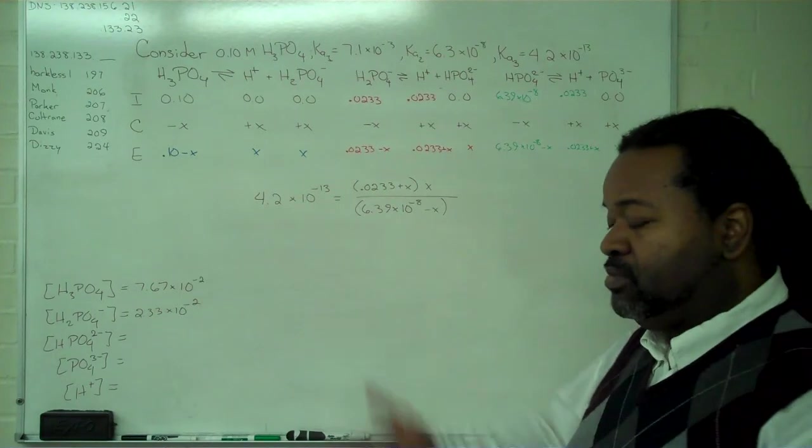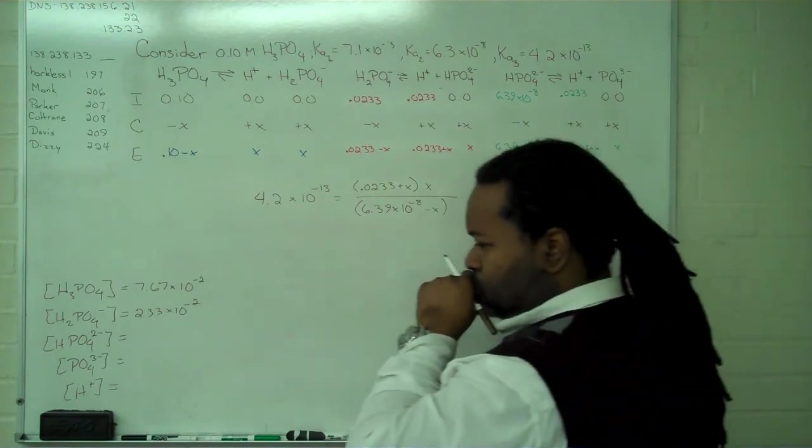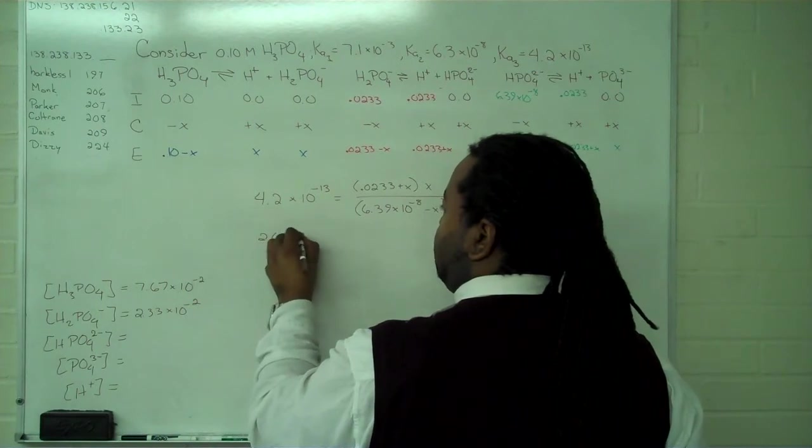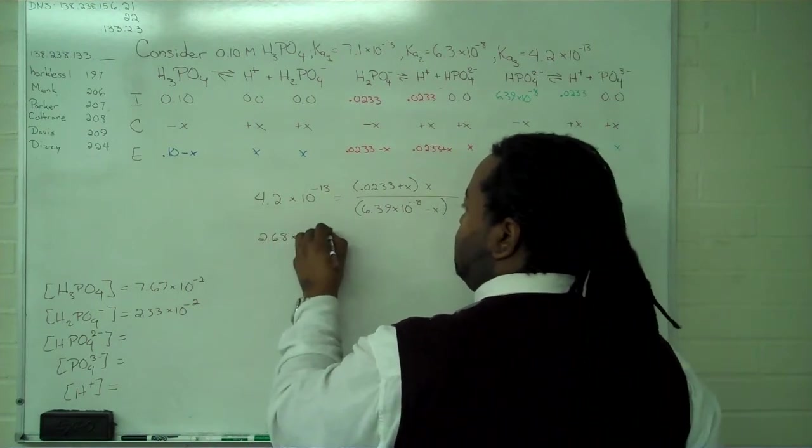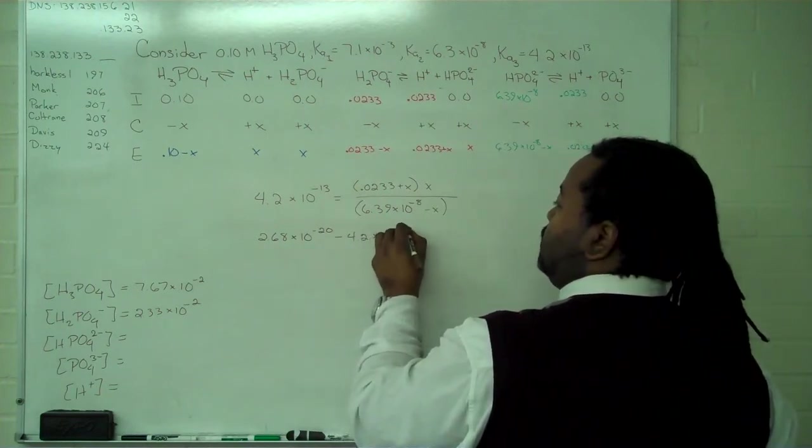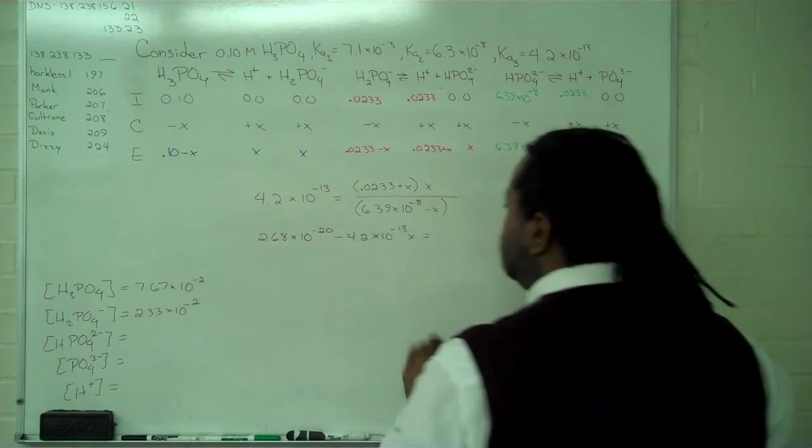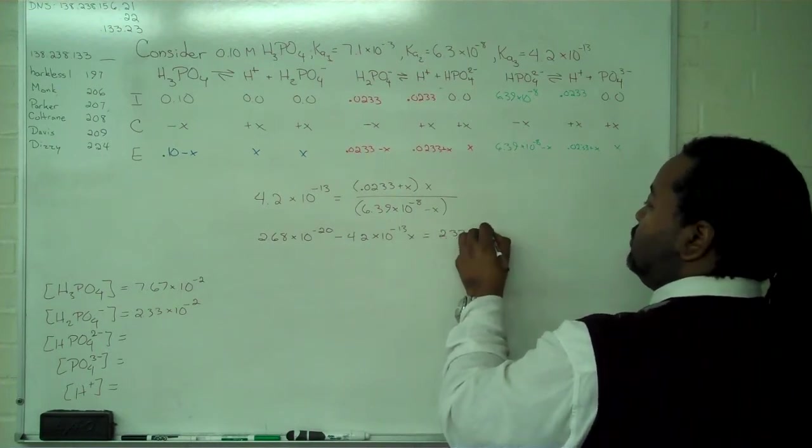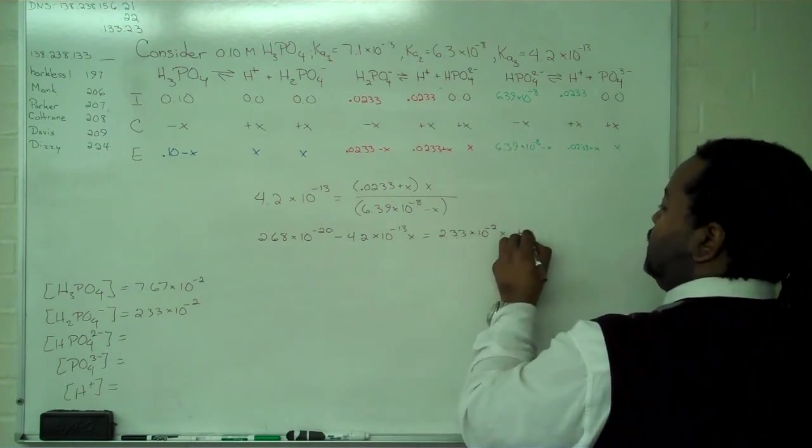We'll get 2.68 times 10 to the negative 20 minus 4.2 times 10 to the minus 13x, and here 2.33 times 10 to the minus 2x plus x squared.